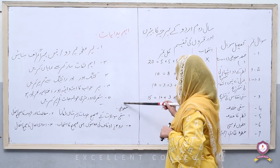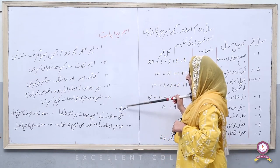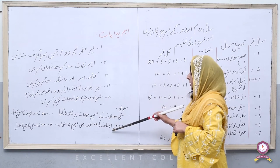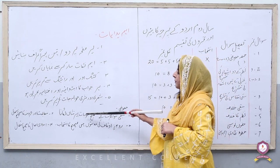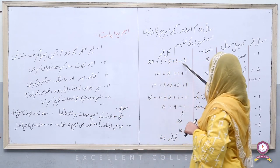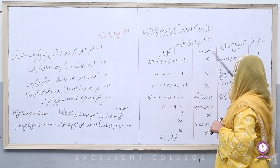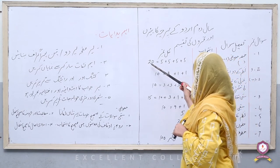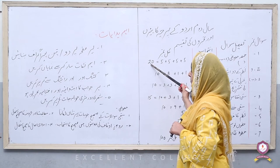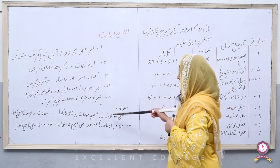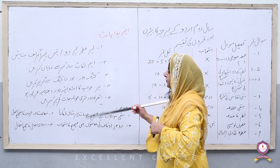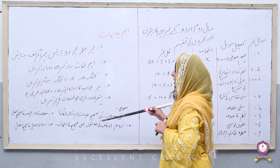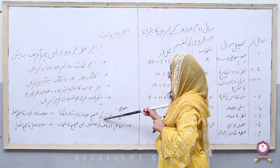فرسٹ ایئر کا معروضی پیپر اور سیکنڈ ایئر کا معروضی پیپر بالکل مختلف ہیں۔ سیکنڈ ایئر میں سوال نمبر ایک کے چار جوز ہیں — الف، بے، جیم، اور دال — اور چاروں کے پانچ پانچ نمبر ہیں۔ پہلا جوز الف میں سبق کی سوالات کے صحیح جوابات پر نشان لگانا ہوتا ہے — حصہ نثر کے جو اسباق آپ نے پڑھے ہیں انہی میں سے MCQs کی شکل میں سوال آئیں گے۔